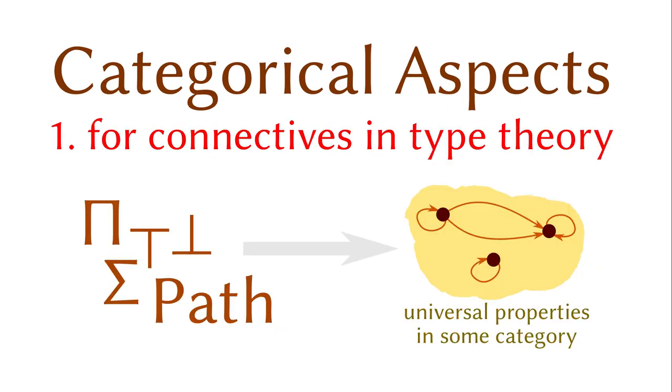As for type theory, two major parts can be rephrased in terms of categories. The first part is various types you have seen in type theory, such as the pi types, the sigma types, the natural number type, the homotopy pushouts, and so on.